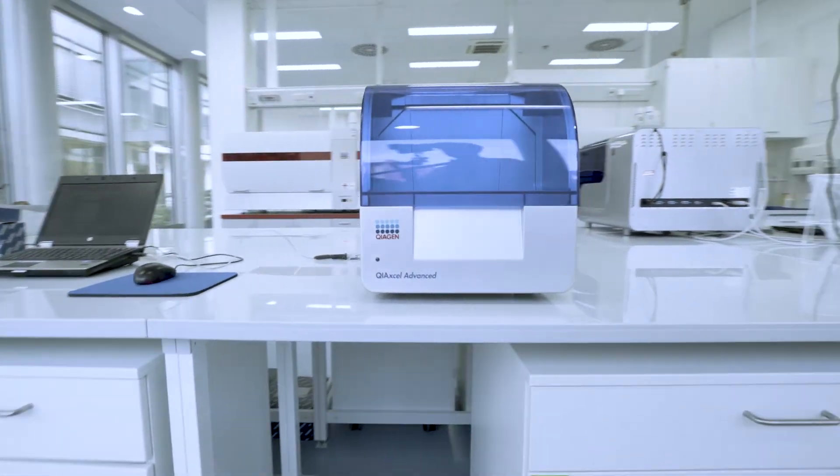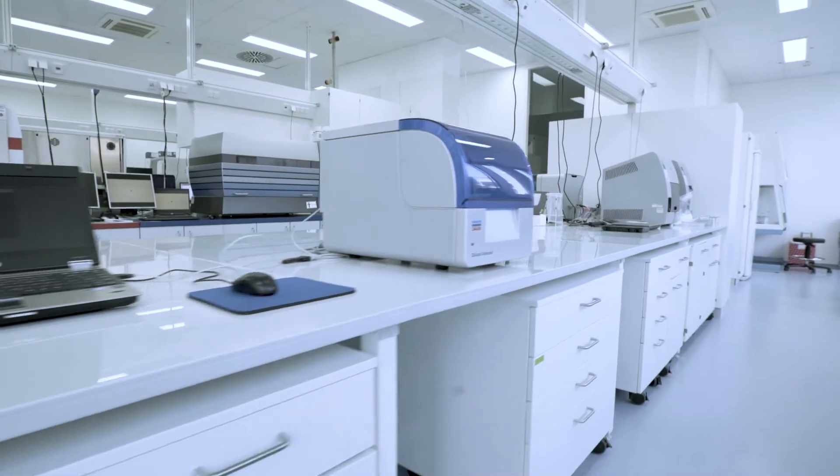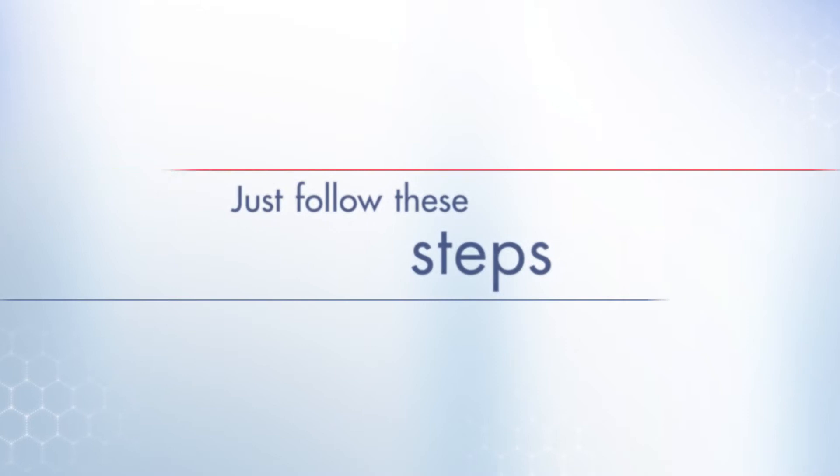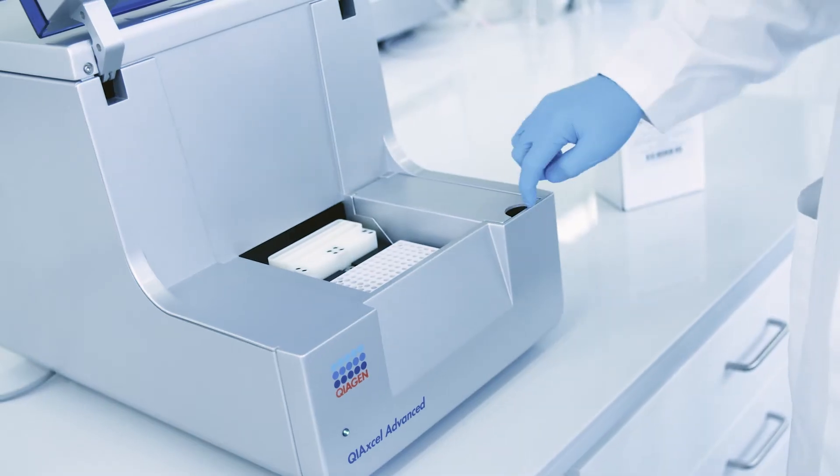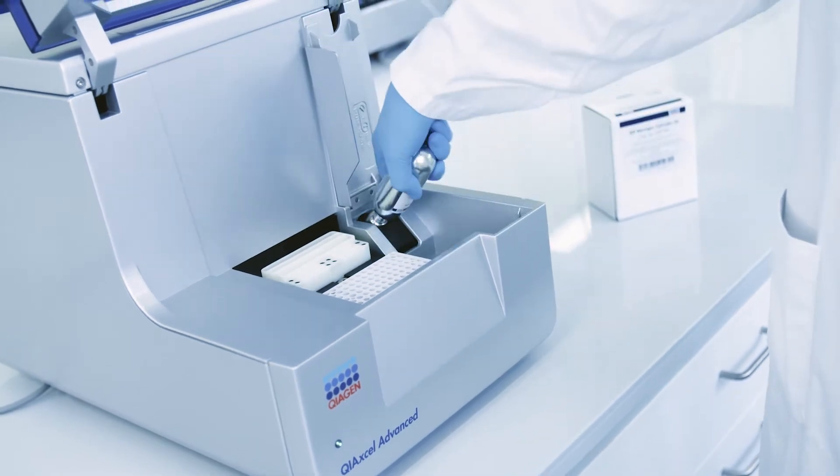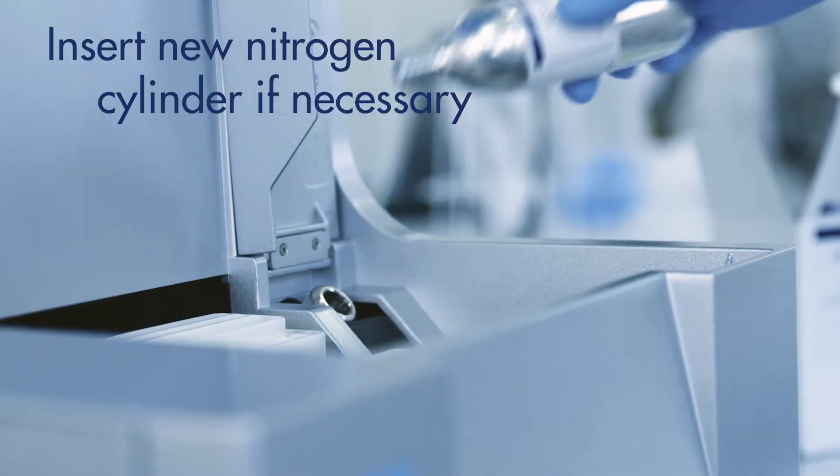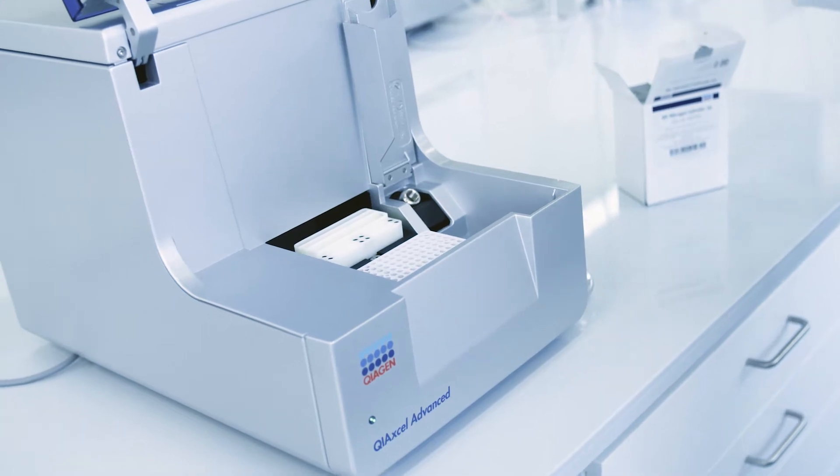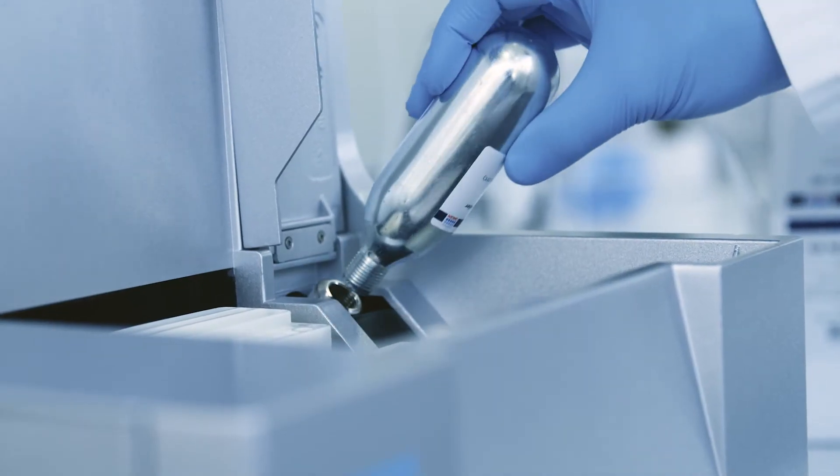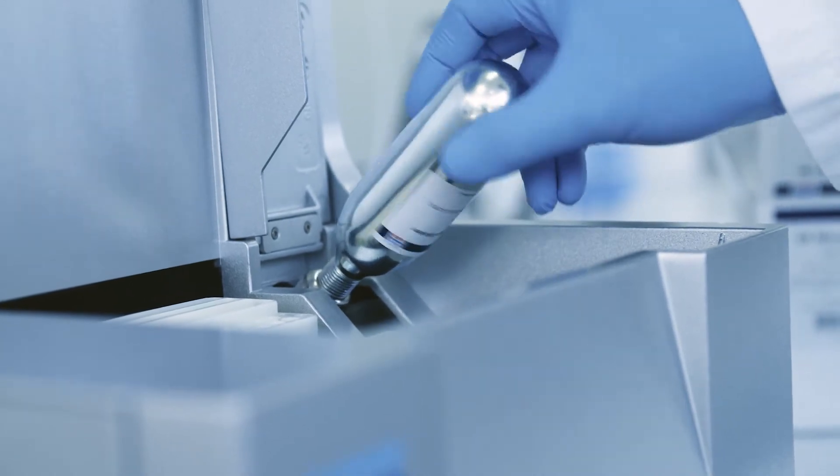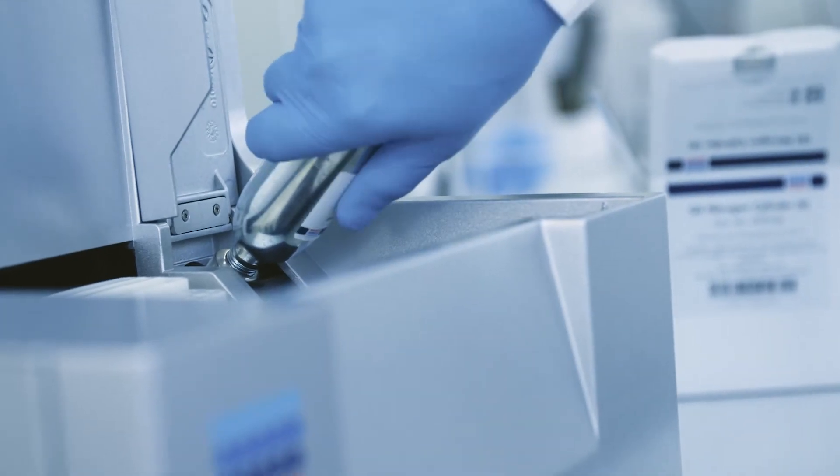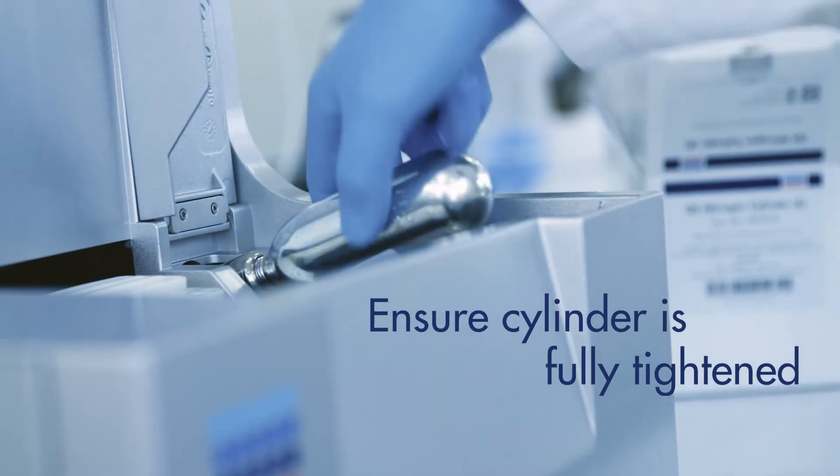Preparation of the Kaixcel Advanced prior to analyte analysis is easy. Just follow these steps. Make sure that sufficient nitrogen is available. If necessary, insert a new nitrogen cylinder into the Kaixcel Advanced. It is important to ensure the bottle is tightly inserted to prevent nitrogen leaks. After the cylinder is pierced by the instrument, make sure that it is fully tightened.